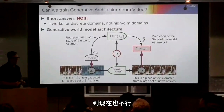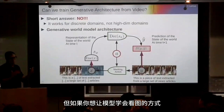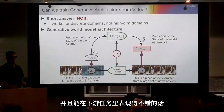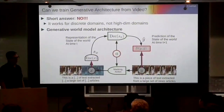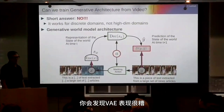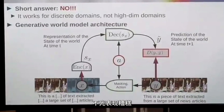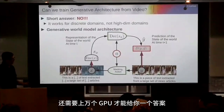And it still doesn't work. VAEs are cool, but if you want to learn a representation of images that gives you decent results on any kind of downstream task, VAEs totally suck. VQVAE even more — not only sucks, but requires 10,000 GPUs to give you the answers.